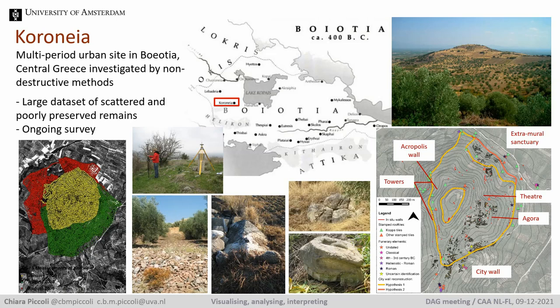The survey is concluded but the data processing and analysis is not completed yet. What I'll be showing is the provisional 3D reconstruction based on available data, focusing especially on architectural finds. A rule-based modeling approach was chosen not just because manually modeling the whole city would have been too time-consuming, but also because data interpretation is still in progress and we expect the 3D reconstruction will need to be updated. The software's integration with GIS was also very important since our survey data are stored in a GIS.